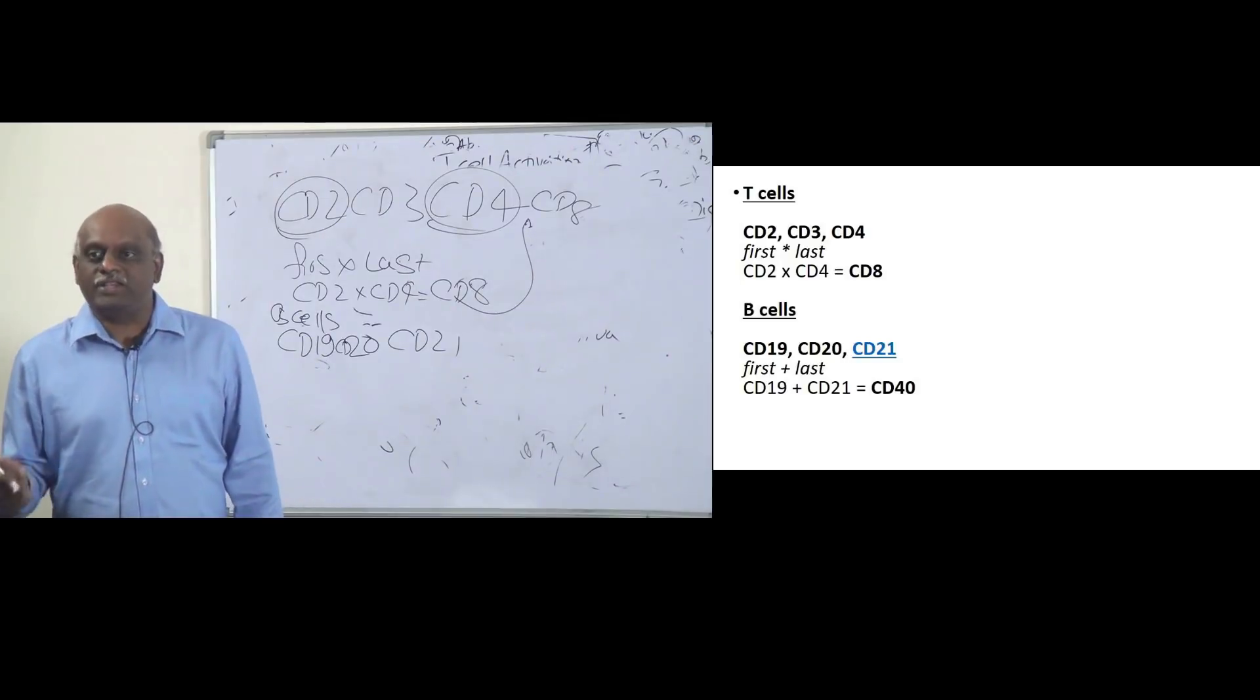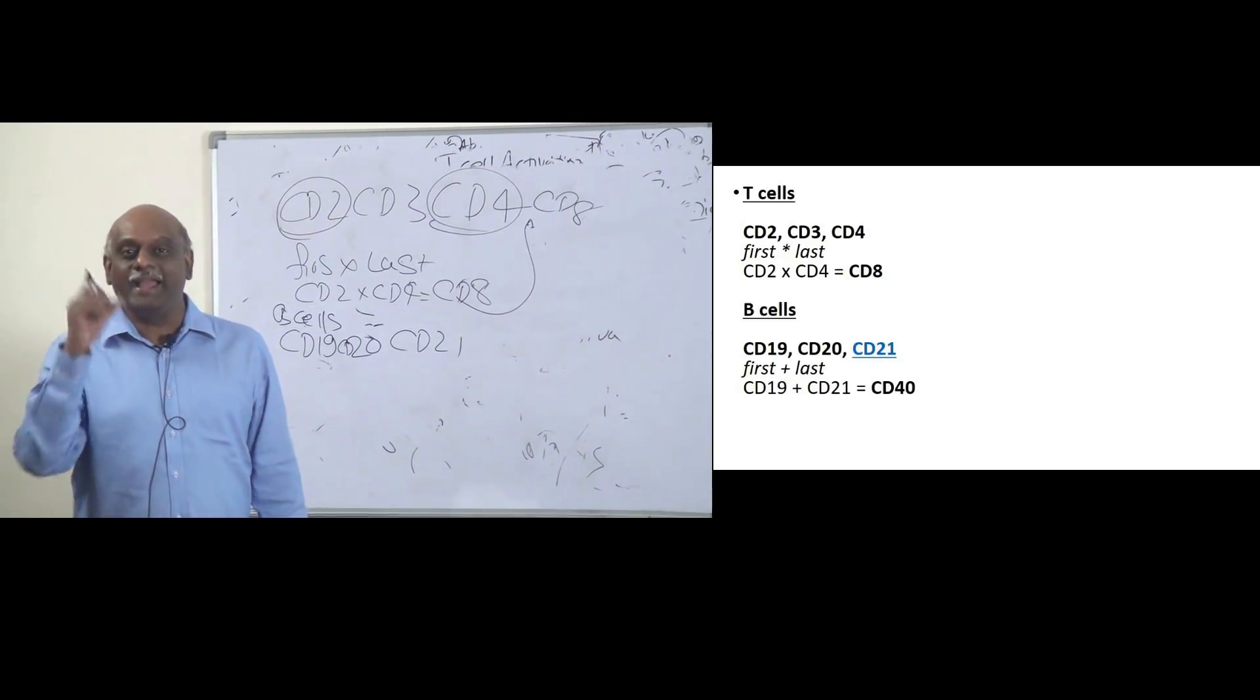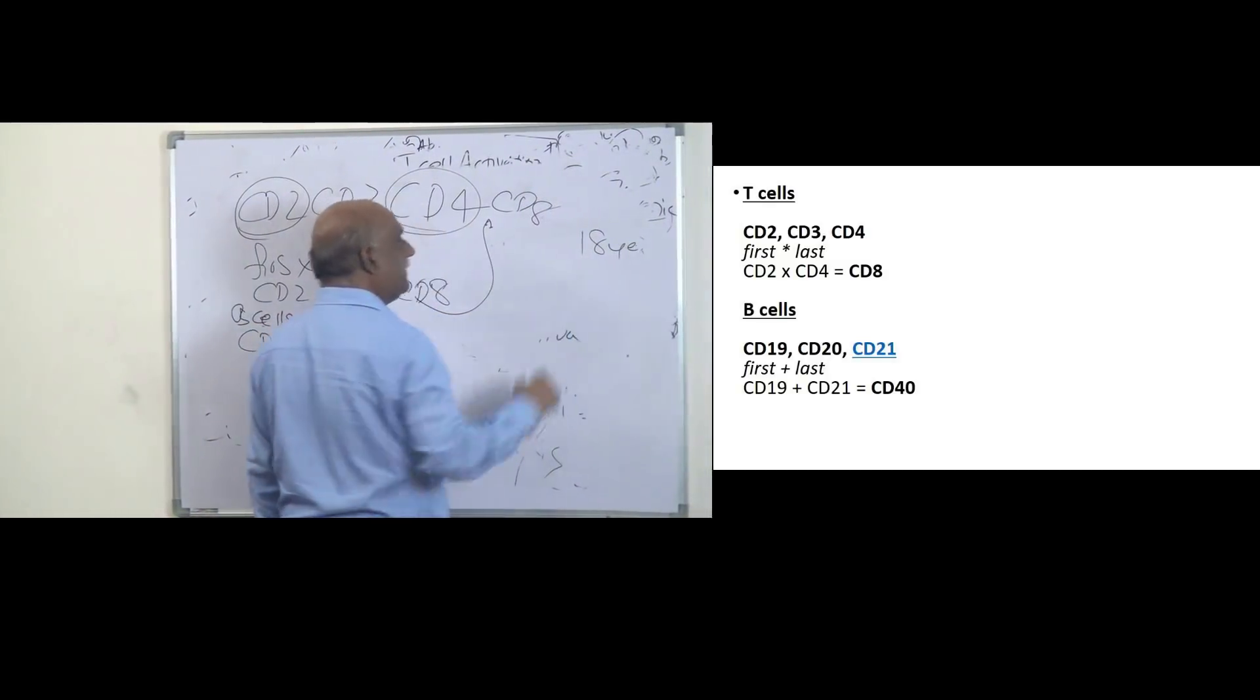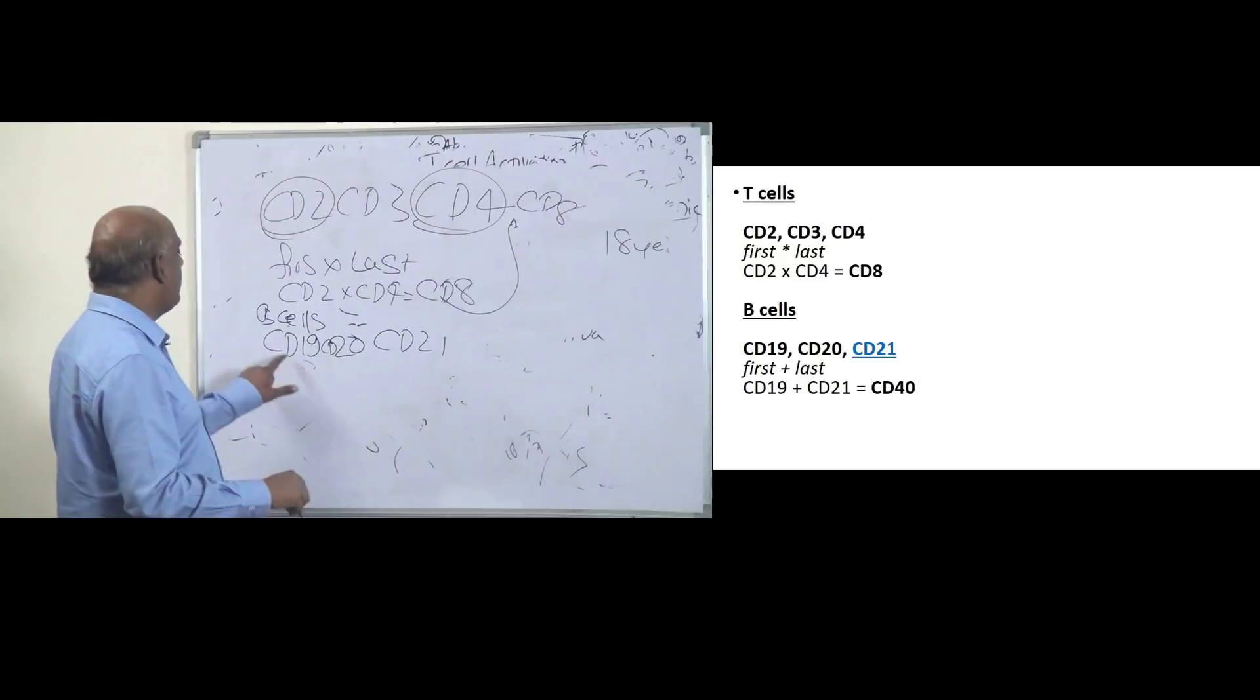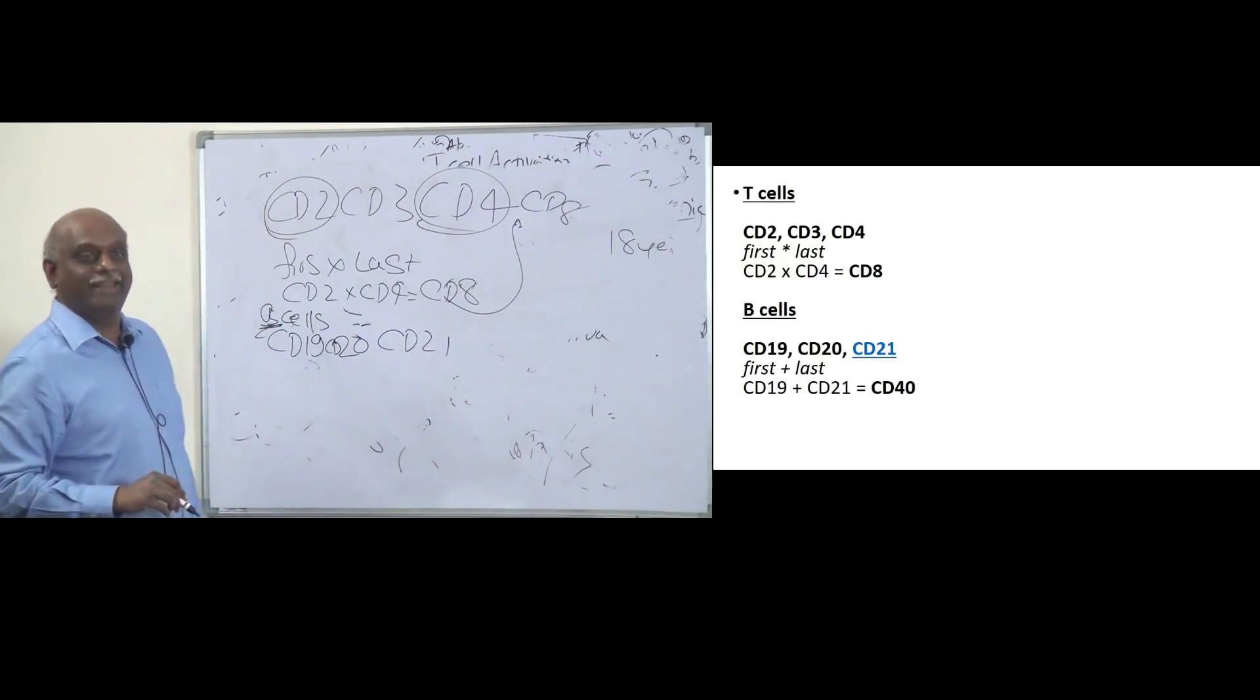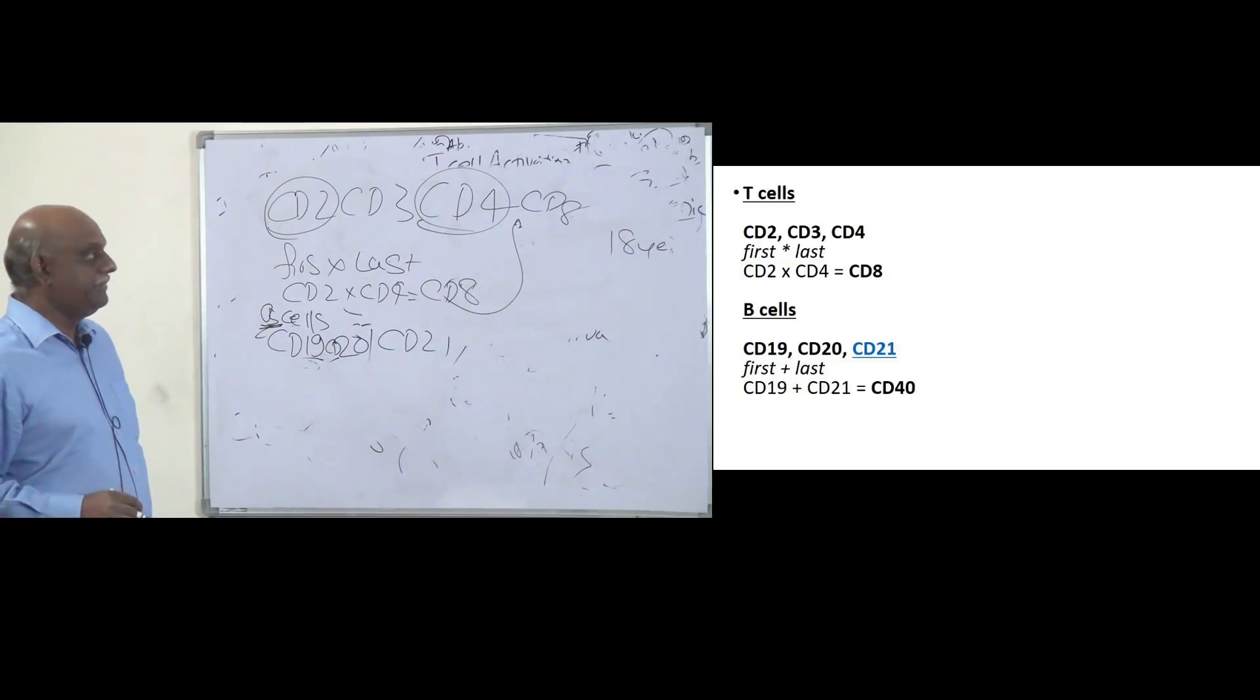People call you Bachelor or Married. What is the age of legal age? 18 years. So after 18 years, what is it? 19. So B-cell is the Bachelor's cell. After 18, that is 19. So CD19, CD20, CD21 is what you need to remember.